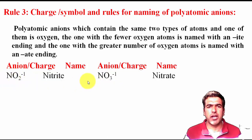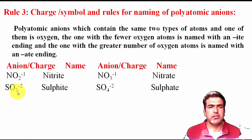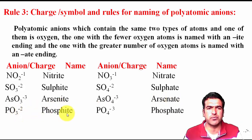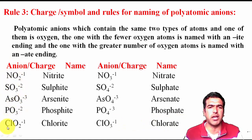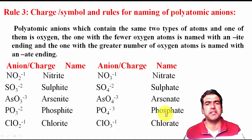For example: NO₂⁻ is nitrite and NO₃⁻ is nitrate (more oxygen gets '-ate'). Similarly, SO₃²⁻ is sulfite and SO₄²⁻ is sulfate. ASO₃³⁻ is arsenite and ASO₄³⁻ is arsenate. PO₃³⁻ is phosphite and PO₄³⁻ is phosphate. ClO₂⁻ is chlorite and ClO₃⁻ is chlorate. So for polyatomic anions, fewer oxygen gives '-ite' and more oxygen gives '-ate.'